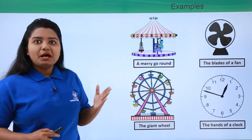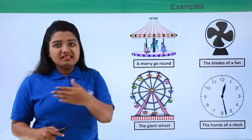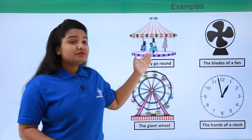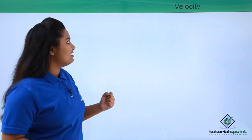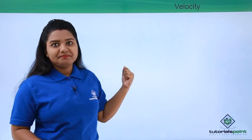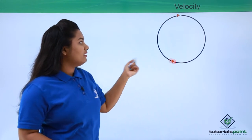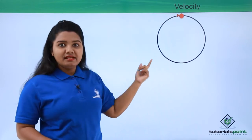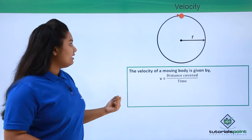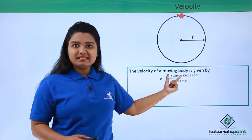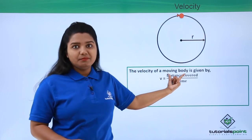Now we know how to find the velocity of a body moving in a linear path, but in this case we have a circular path. So let's see how to find velocity in a circular path. Suppose a body has traveled along a circular path with radius r. We know the formula for velocity is v equals distance covered divided by time taken. We need to figure out what distance the body covers in one full trip around the circle.